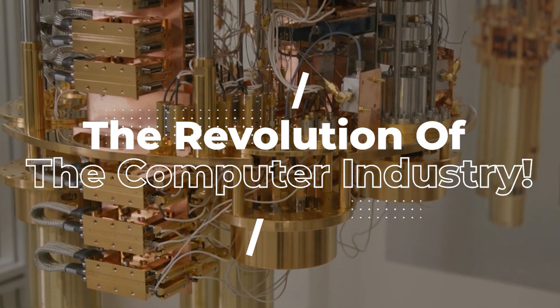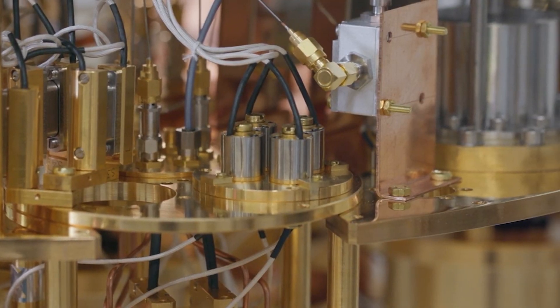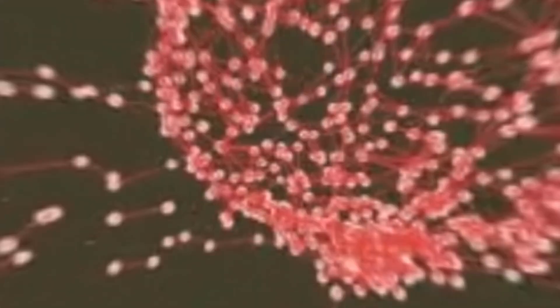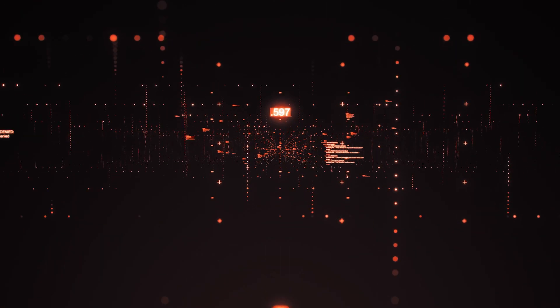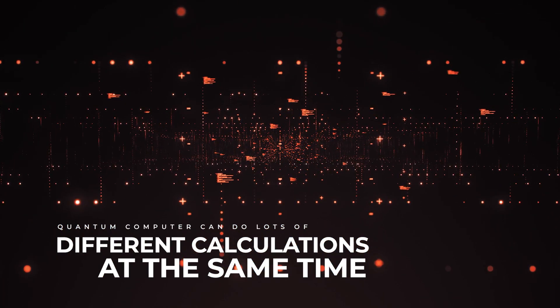Quantum computers are like super-powered computers that can do a bunch of math problems at the same time. They use tiny particles called qubits instead of regular on and off switches. Qubits can be in two states at once, which lets a quantum computer do lots of different calculations at the same time.